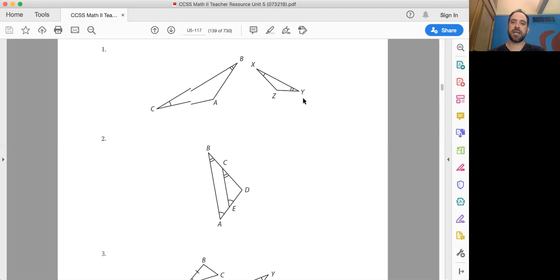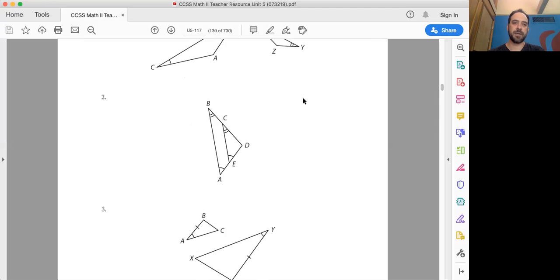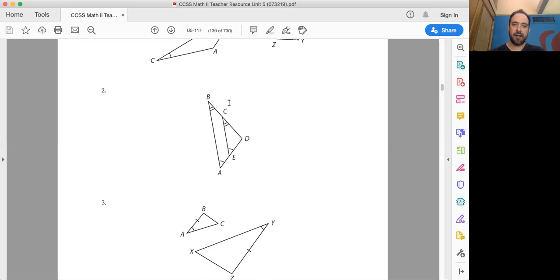So a lot of these are kind of just checking right now that you understand the concept. Number two, here we have again two triangles. This triangle happens to be inside of the other one. So my question to you is this angle D, since it's in common for BDA and also CDE...